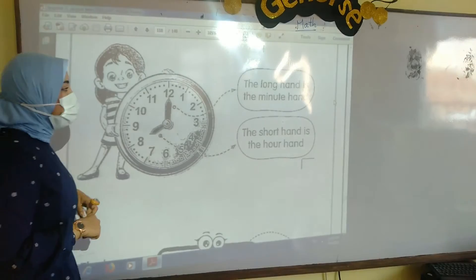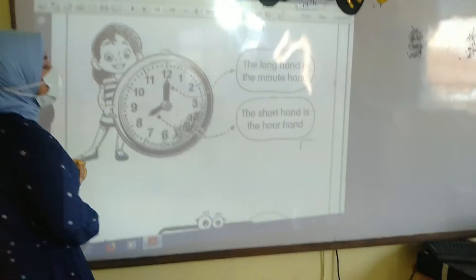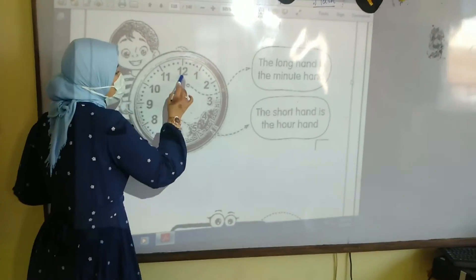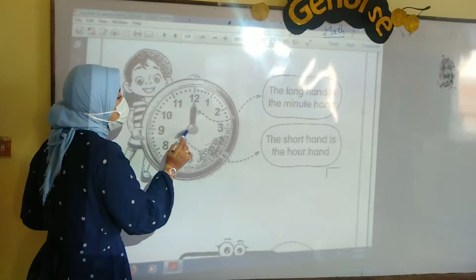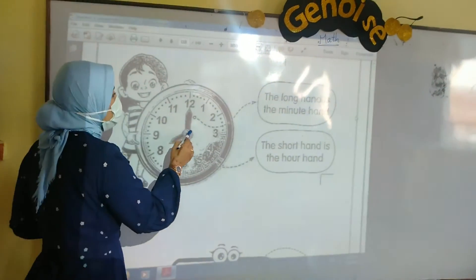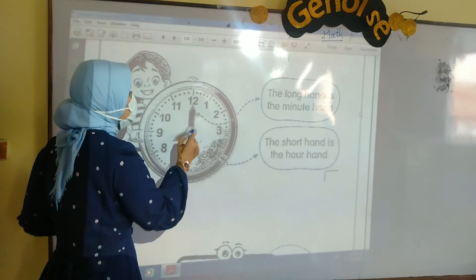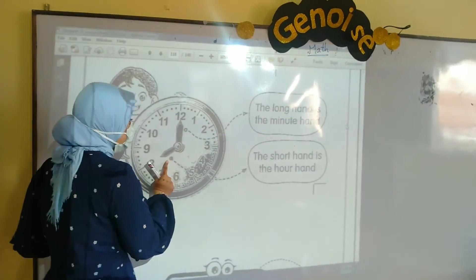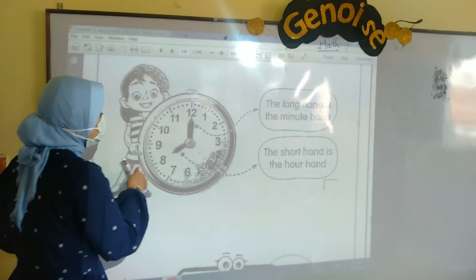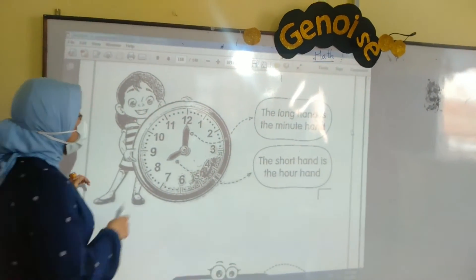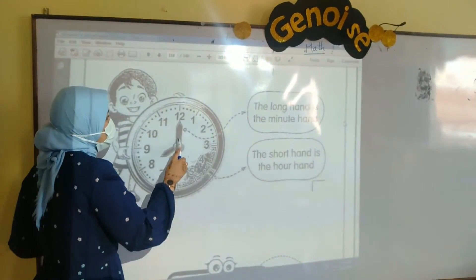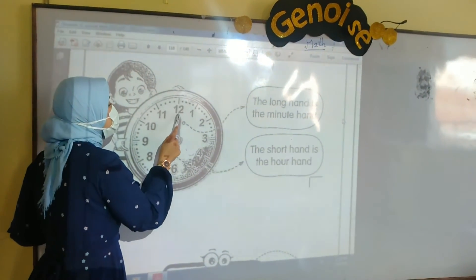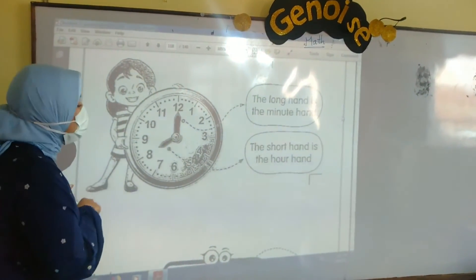Now, join in. Let's talk about the clock. We started before with the clock. The clock has 2 hands — the long hand is the minute hand and the short hand is the hour hand.